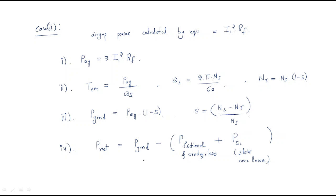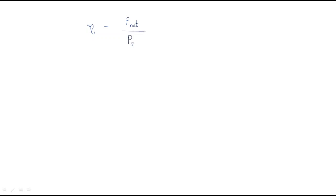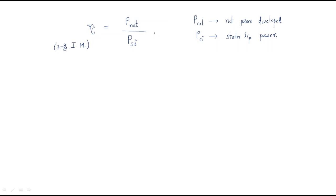After that we find the efficiency. Efficiency equals output power divided by input power — that is, net power divided by the stator input power. By taking this ratio of net power to stator input power, we directly get the efficiency of the three-phase induction motor.